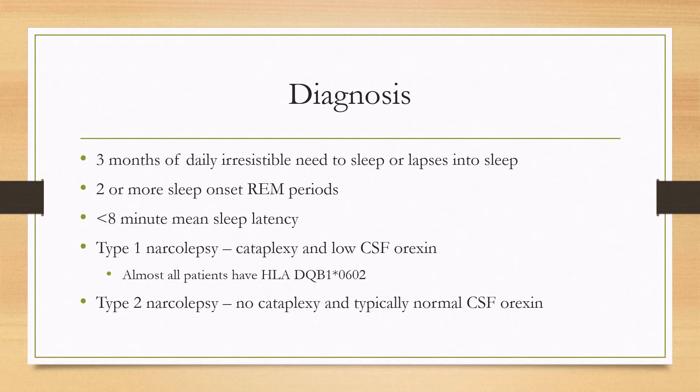Type 1 narcolepsy is diagnosed if the patient has cataplexy. An ancillary test is low CSF orexin — almost all type 1 narcoleptics have low CSF orexin. Almost all type 1 narcoleptics also carry the HLA-DQB1-0602 mutation, though this is not required for diagnosis.